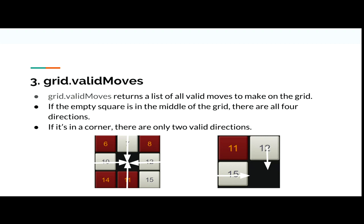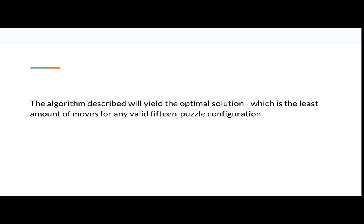For example, if the empty square is in the middle of the grid, there are four directions it can move in. However, if it's in the corner, there are only two valid directions. In a nutshell, this algorithm uses the optimal solution, which is the least amount of moves required for any valid 15th puzzle configuration.